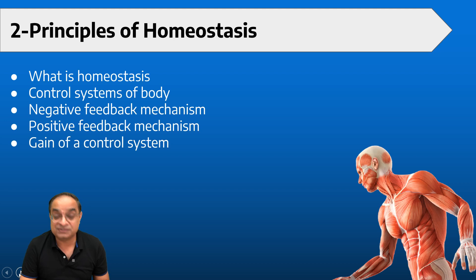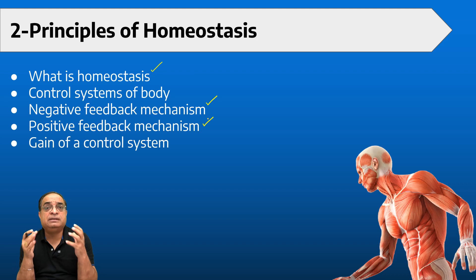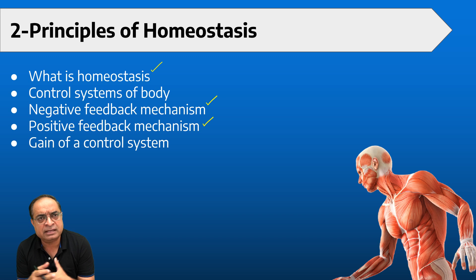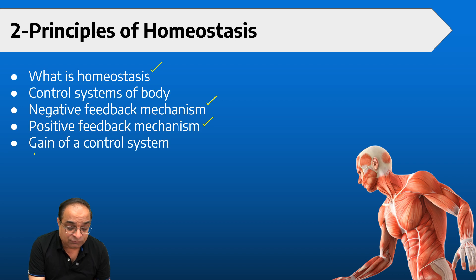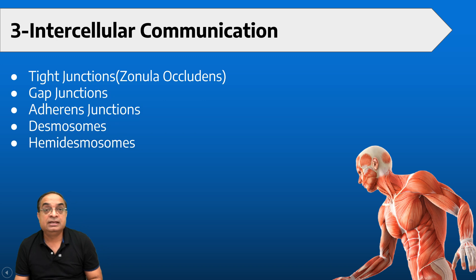Homeostasis—what all we have to study in homeostasis? What is homeostasis? The maintenance of constant internal environment, control systems in the body. What are the variables? What is a control center? Negative feedback mechanism, positive feedback mechanism. Negative feedback we'll discuss with respect to osmoregulation, thermoregulation. Positive feedback mechanism we'll be discussing parturition, the mechanism of giving birth to the baby, and we'll be talking about the gain of a control system.